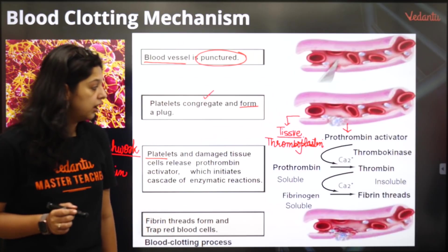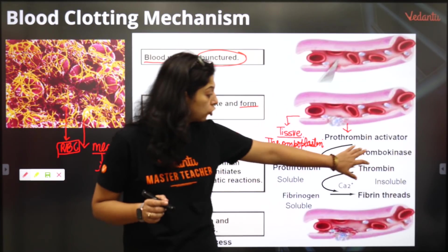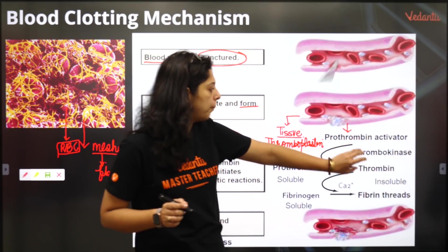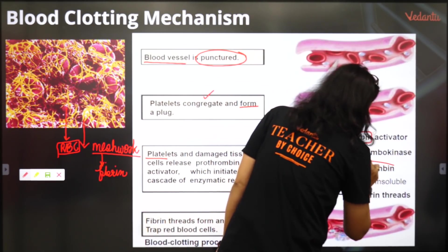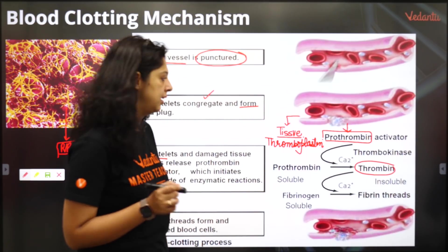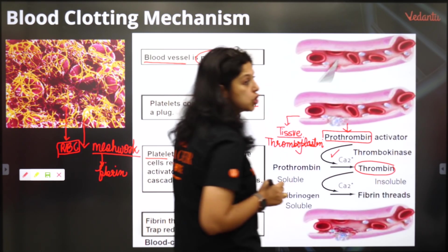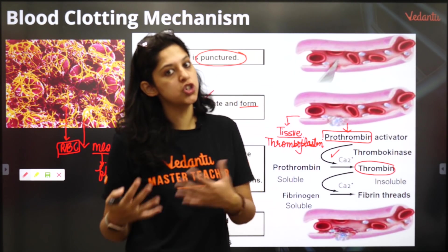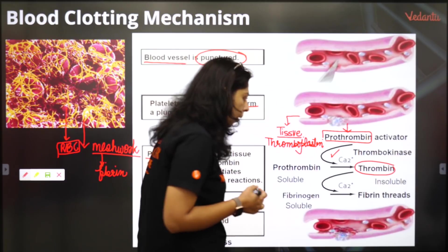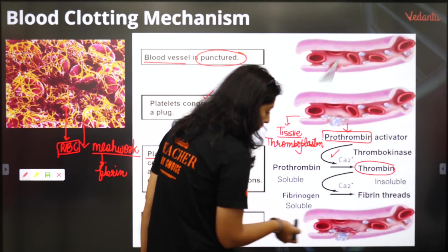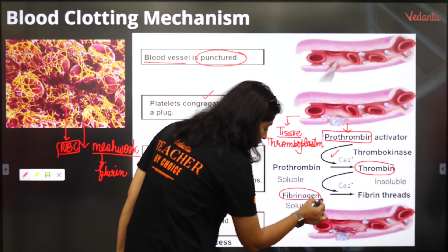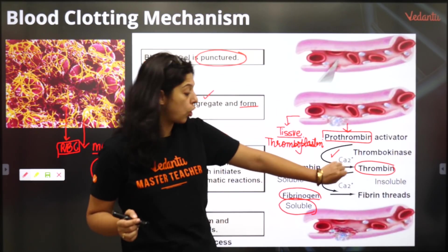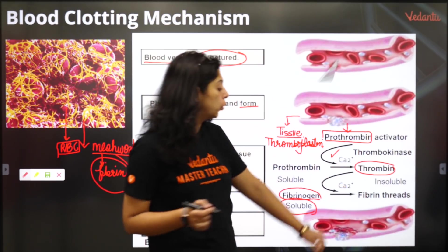The prothrombin activator will convert thrombokinase to thrombin — yes, prothrombin to thrombin. Prothrombin se thrombin banaya — kisne banaya? Thrombokinase. What else do I require for it? Calcium. Because blood clotting ke liye calcium is very very important, just like calcium is very important for muscle contraction. Now thrombin has to convert fibrinogen, jo ki soluble hai, into this mesh work. This mesh work is made up of fibrin threads jo insoluble hai. So this thrombin is going to convert fibrinogen to fibrin threads.